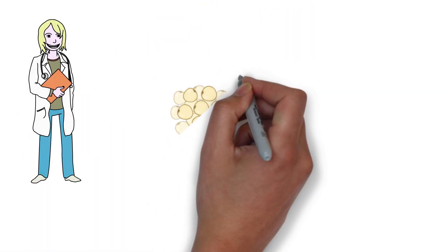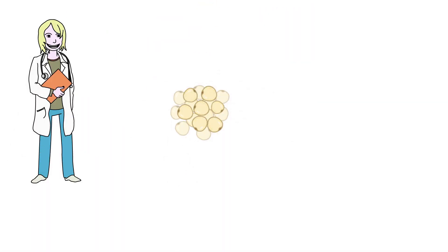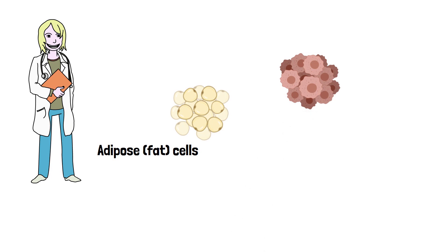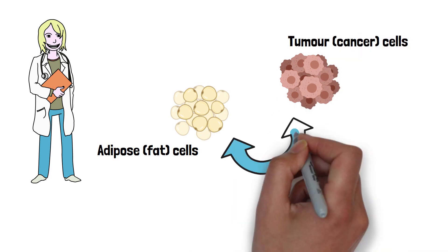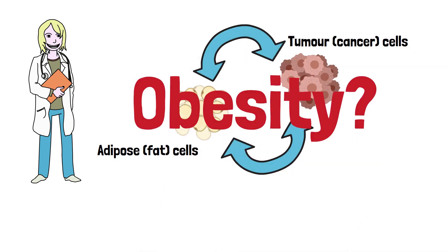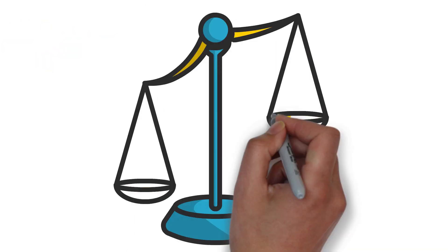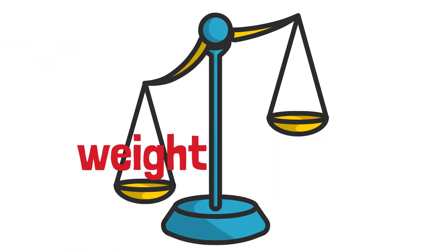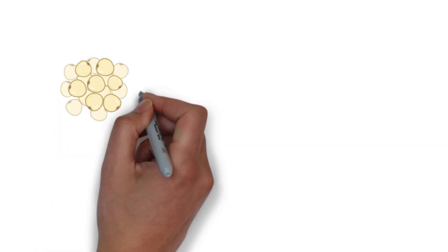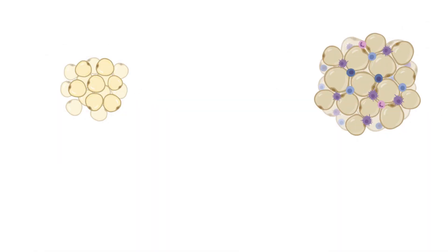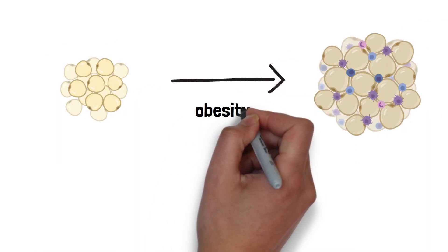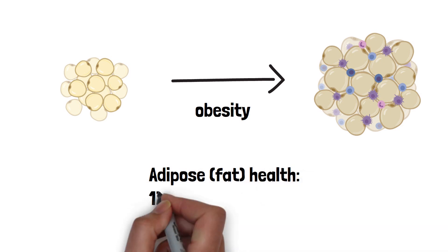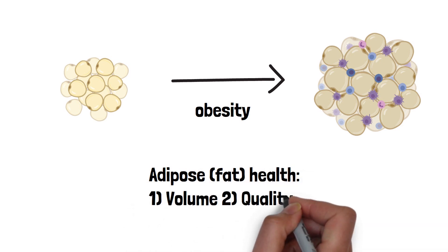As we've discussed, today I'll be showing you how your adipose cells might be interacting with tumor cells on a molecular level. But first, what do you think of when you hear obesity? Heavier weight compared to one's height? Typically, obesity means unhealthy expansion of fat tissue. The health of fat tissue can be measured in different ways, including the volume — the size of fat tissue called the adipose tissue — and the quality of adipose tissue.